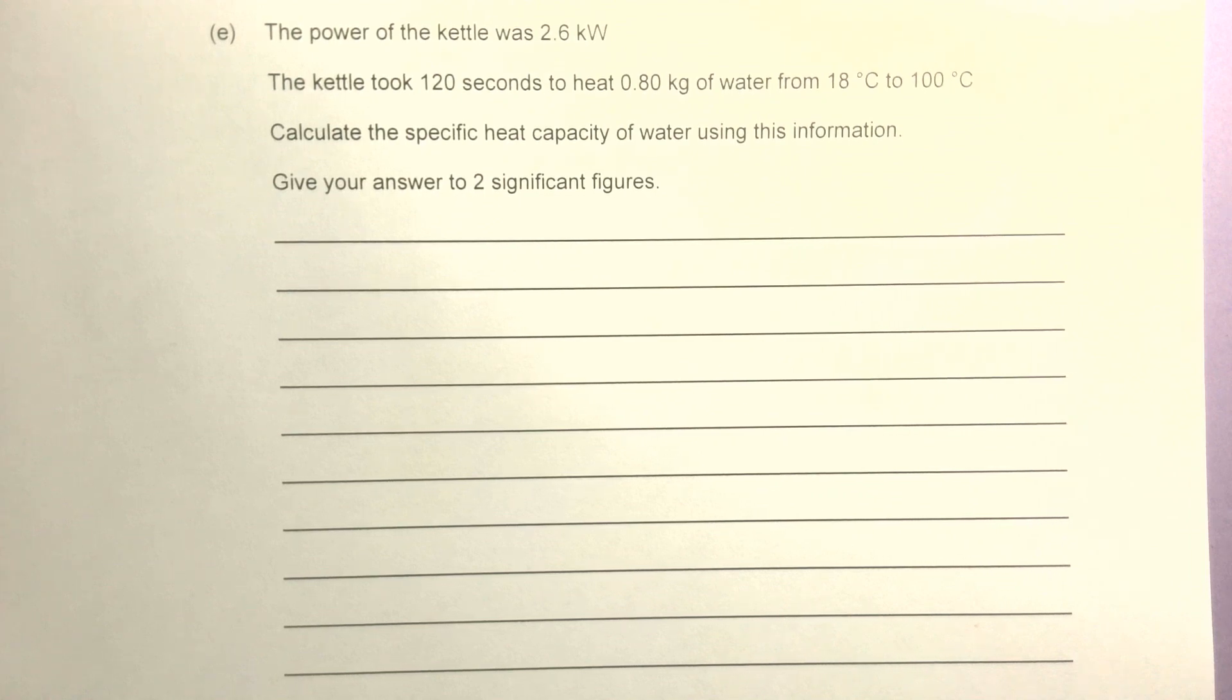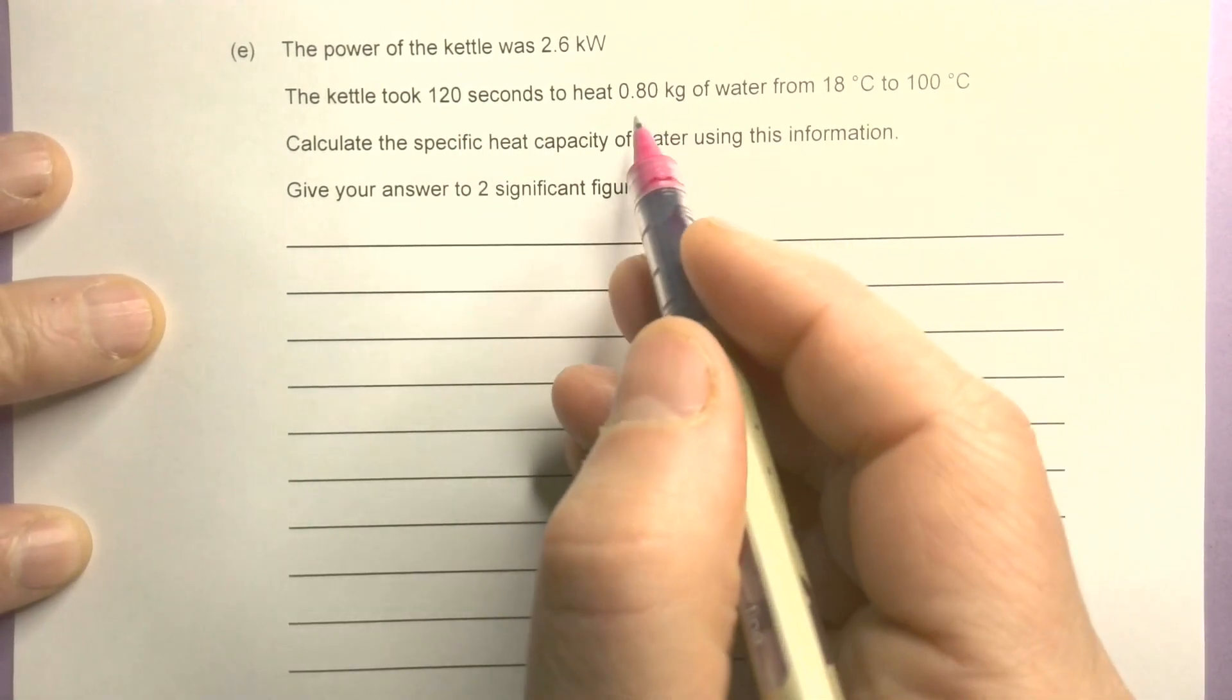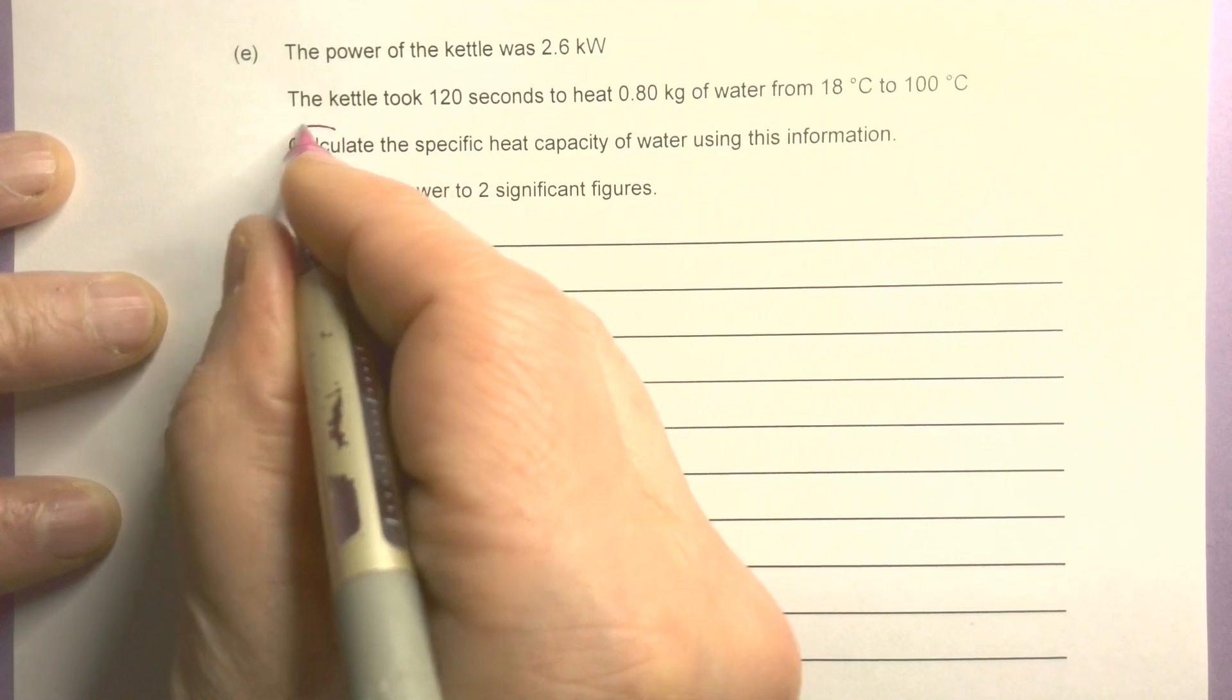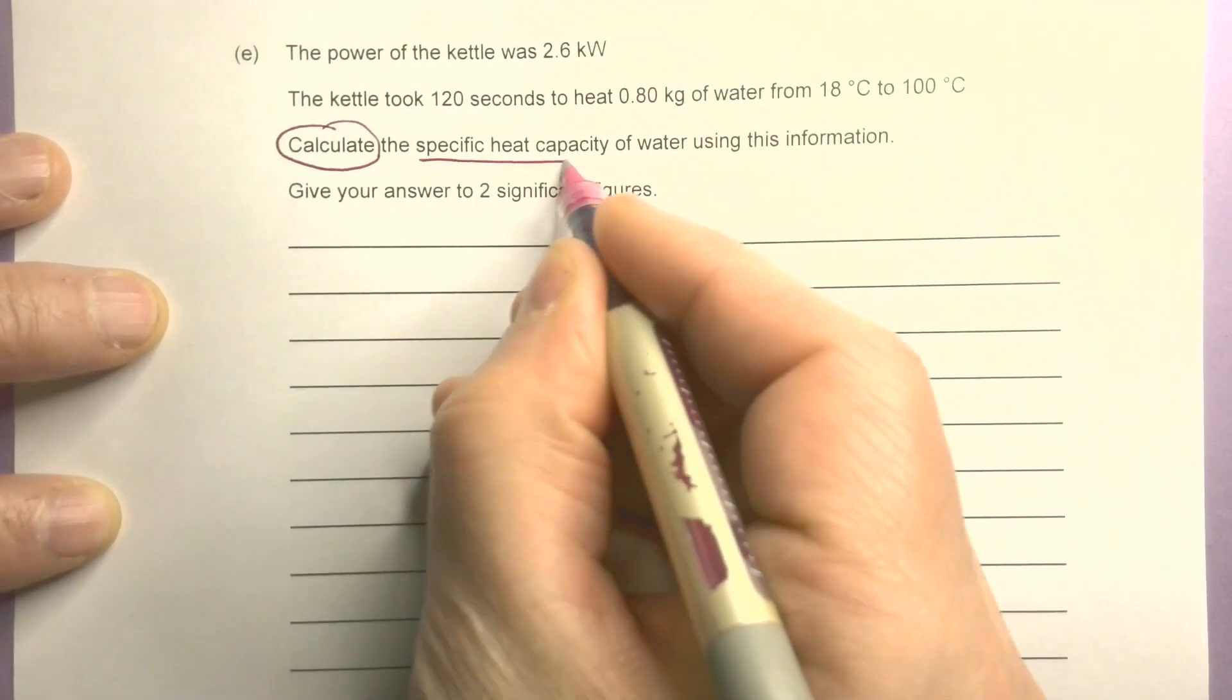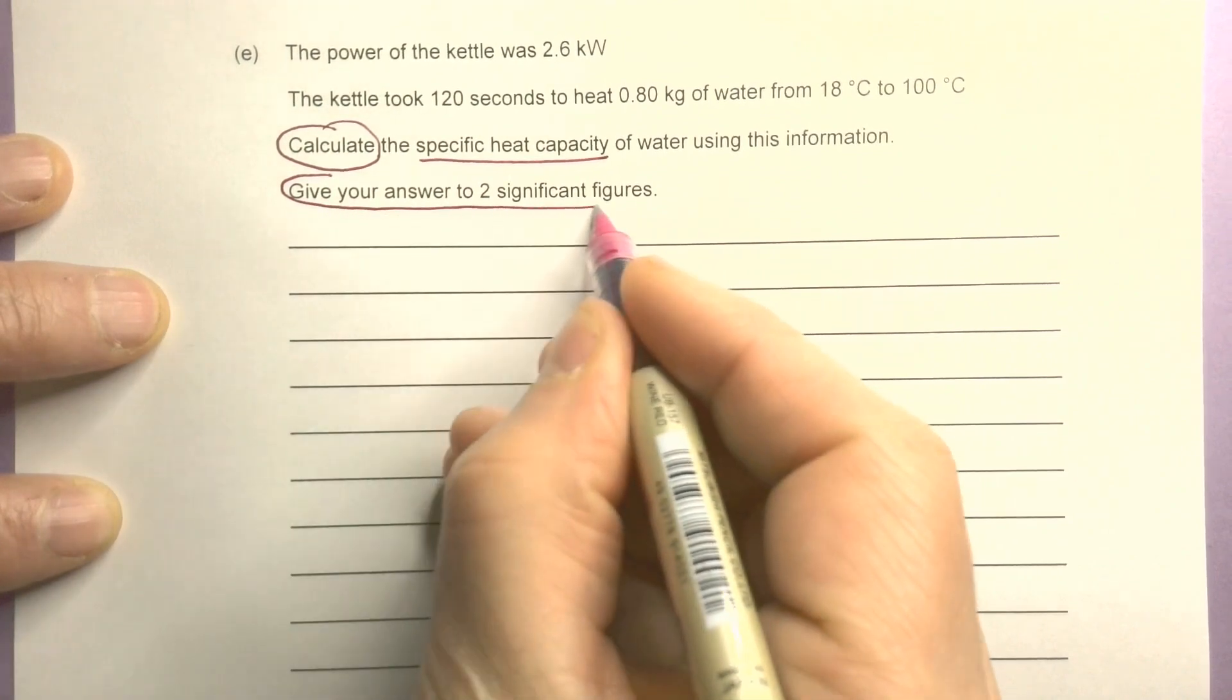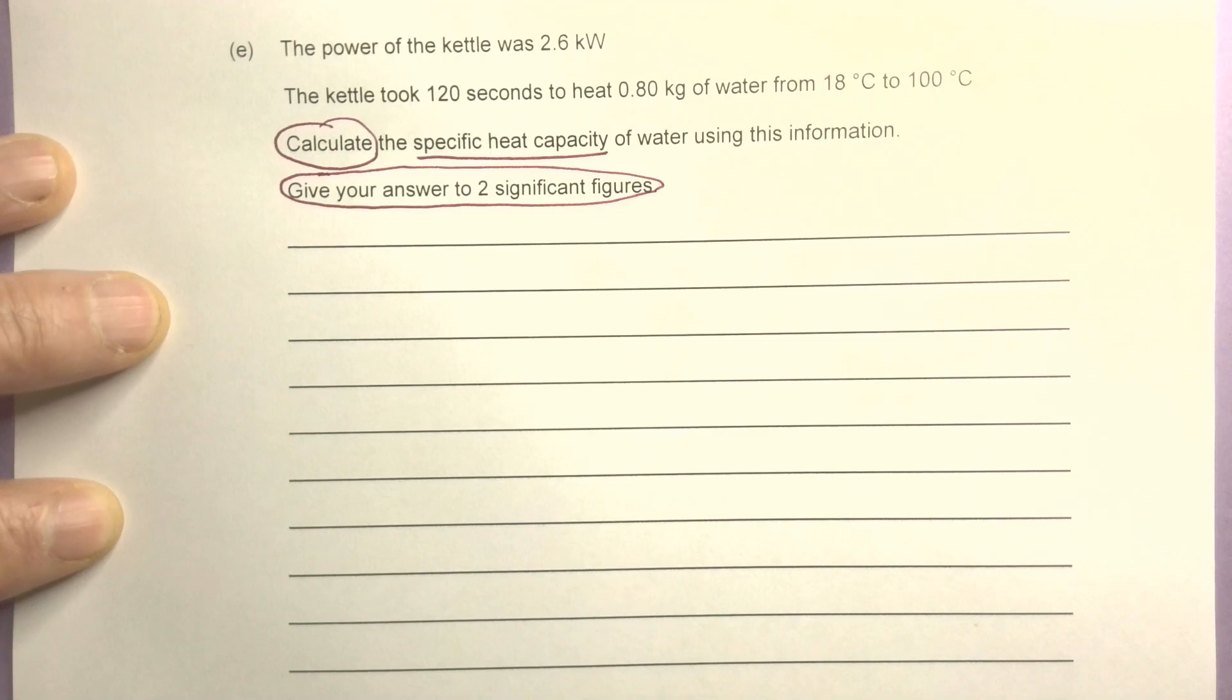Okay, part E. The power of the kettle was 2.6 kilowatts. The kettle took 120 seconds to heat 0.8 kilograms of water from 18 to 100 degrees Celsius. Calculate the specific heat capacity of water using this information and give your answer to 2 significant figures. It's worth six marks.